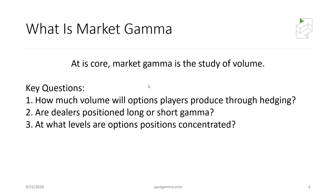All volatility estimates tell you is how much a given name is expected to move on the day. The third question is: where are those positions concentrated? There's a lot of open interest at the 3300 strike in SPX — a key resistance level today — and also at the 3267 level as a support area. You don't even need to know what an option is or how to calculate gamma. What you need to know is what that metric is telling you — like knowing how to drive a car without knowing how the engine works.